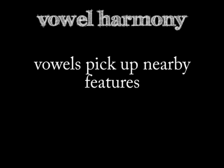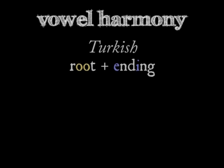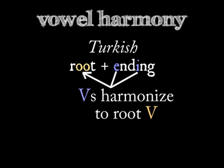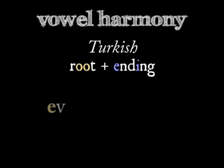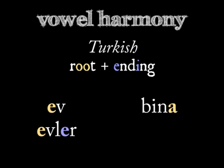If one or more vowels change to become like another vowel within the same word, it's called vowel harmony. Turkish builds words by tacking on endings, and the vowels in those endings harmonize with the last vowel in the root word. The Turkish noun 'ev' means 'house' and the plural is 'evler', where the plural ending has the matching vowel E. But the plural of 'bina', meaning 'building', is 'binalar', with an A.